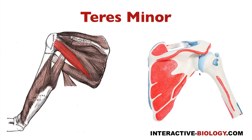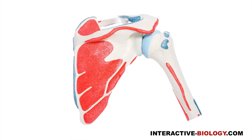So when we look at these three muscles and look at the origins and insertions — specifically the insertions, which is why I wanted to put these together — we have the upper, middle, and lower facet of the greater tubercle. Those are the insertion points for supraspinatus, infraspinatus, and teres minor.